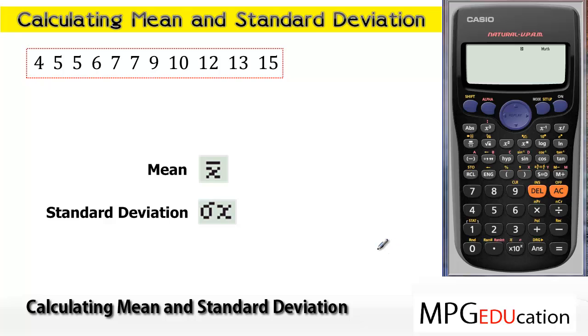In this video, I'm going to show you how to calculate the mean and standard deviation using an FX82AU Casio calculator. In order to enter this data in and calculate the mean and standard deviation, we first have to put the calculator into stats mode.